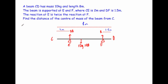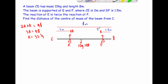Remember that when the beam is in equilibrium the forces up equal the forces down. So 2R plus R equals 98 newtons, so 3R equals 98 newtons, meaning R equals 98 divided by 3, which is 32 and 2 thirds newtons. That means the reaction at F is 32 and 2 thirds newtons, and the reaction at E, which is twice that, is 65 and a third newtons.